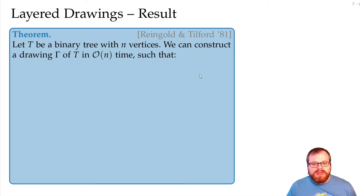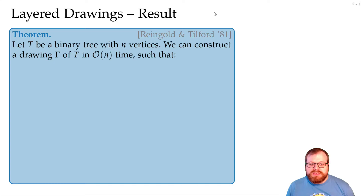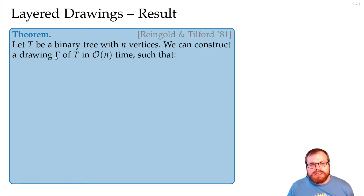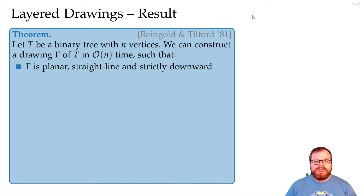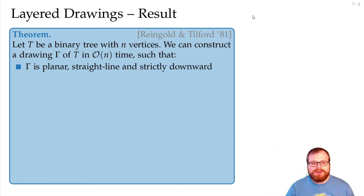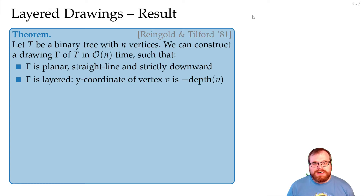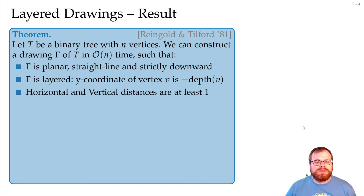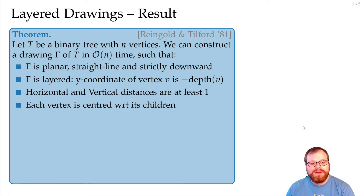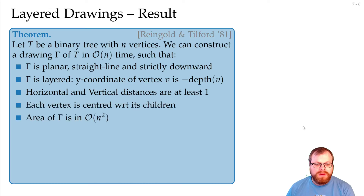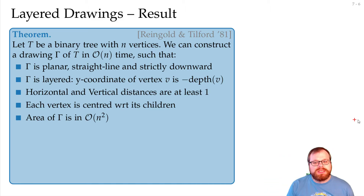So let's state our result as a theorem. This algorithm was invented by Rheingold and Tilford in 1981, and with some slight adjustments later, it is still the standard algorithm to draw trees. Given a binary tree with n vertices, we can construct a drawing in linear time with the following properties: the drawing is planar, straight-line, and strictly downward, so from root to leaves we only have downward edges. We have a layered drawing where the y-coordinate of every vertex is minus its depth, and the horizontal and vertical distances between vertices are at least one.